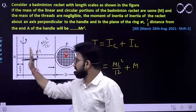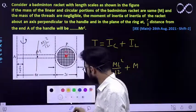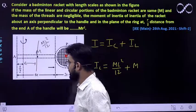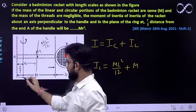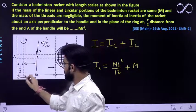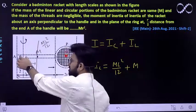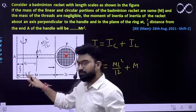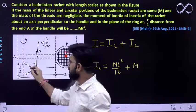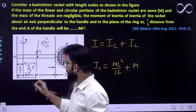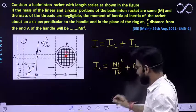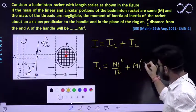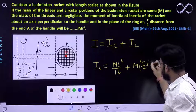That is the parallel axis theorem. So what is the perpendicular distance from this particular point? We already know that this whole distance is 3R. So this distance must be equal to 3R minus R/2, which is 2.5R — that is 5R/2. So we will be using M times (5R/2)² as the second term.